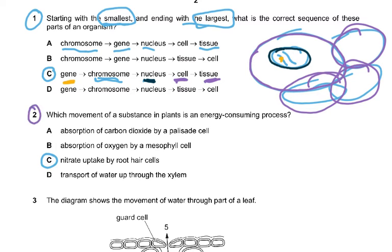Question 2: Which movement of substance in plants is an energy consuming process? Absorption of carbon dioxide by a palisade is diffusion. Absorption of oxygen by a mesophyll cell is respiration, diffusion. Nitrate uptake by root hair cells would only be active transport. Transport of water up through the xylem would be mass flow or diffusion of water inside the xylem.